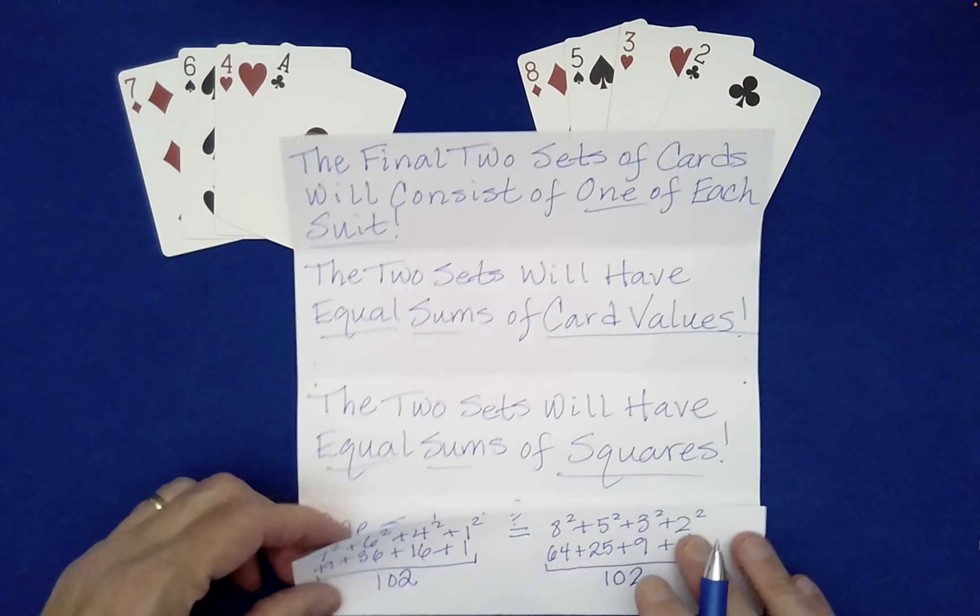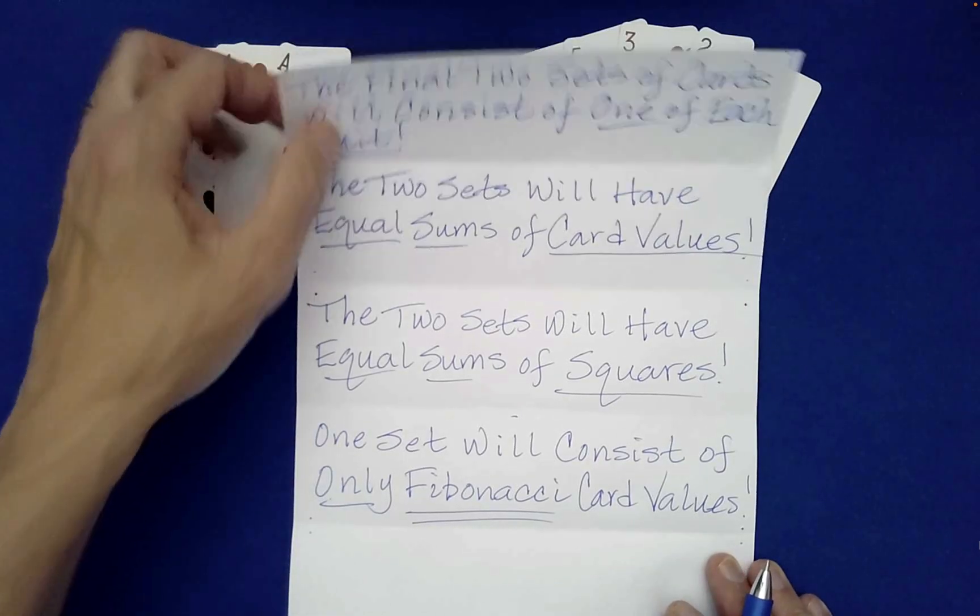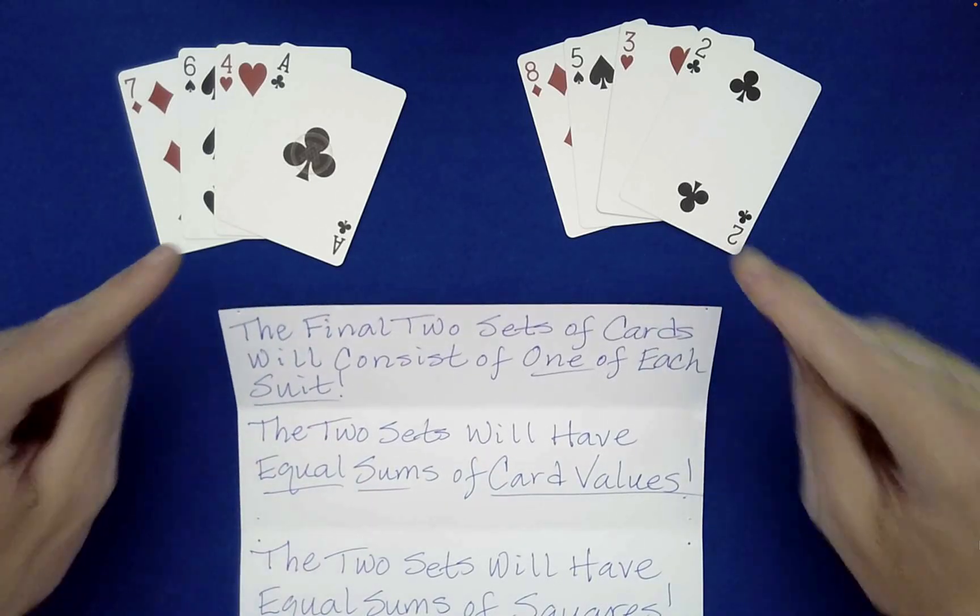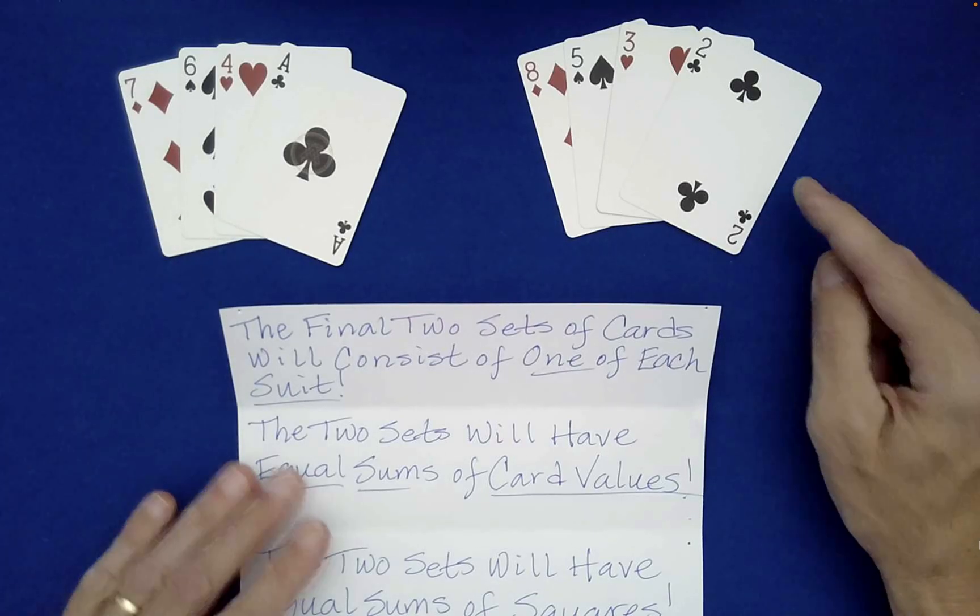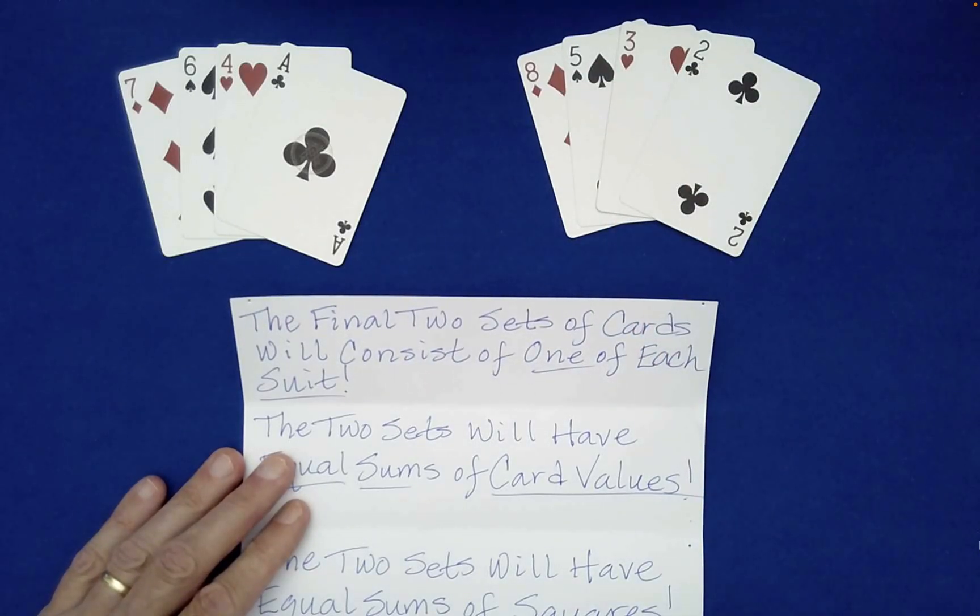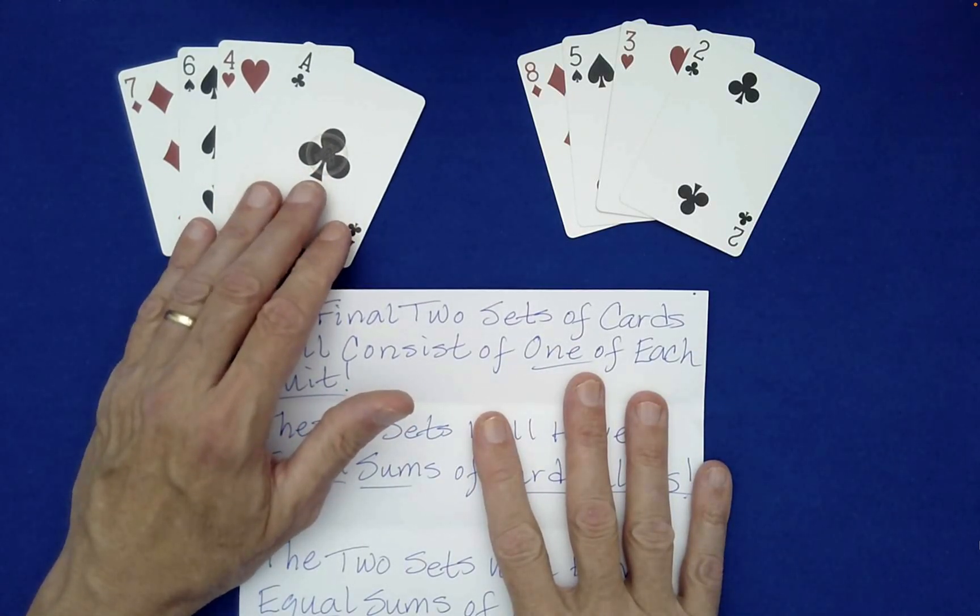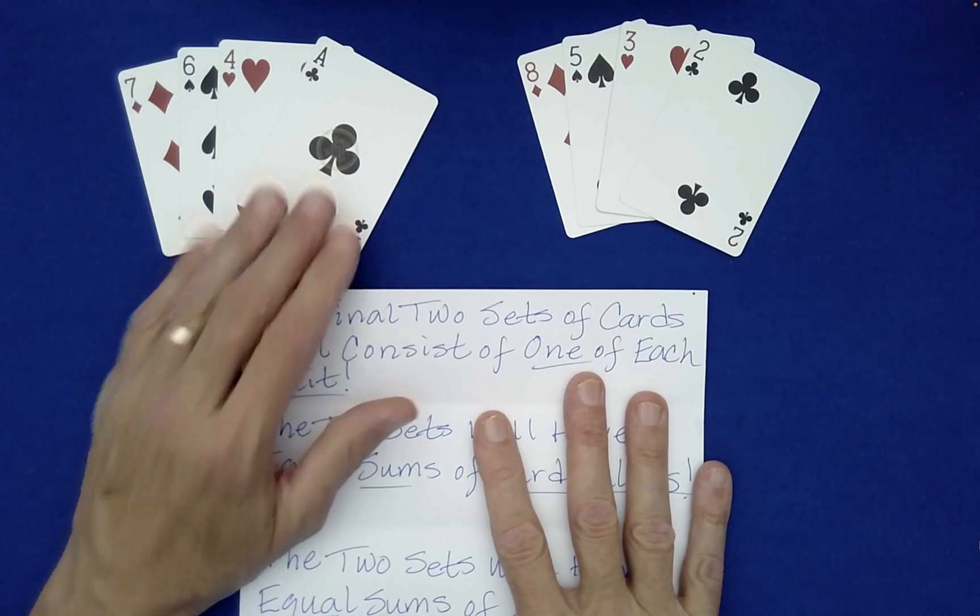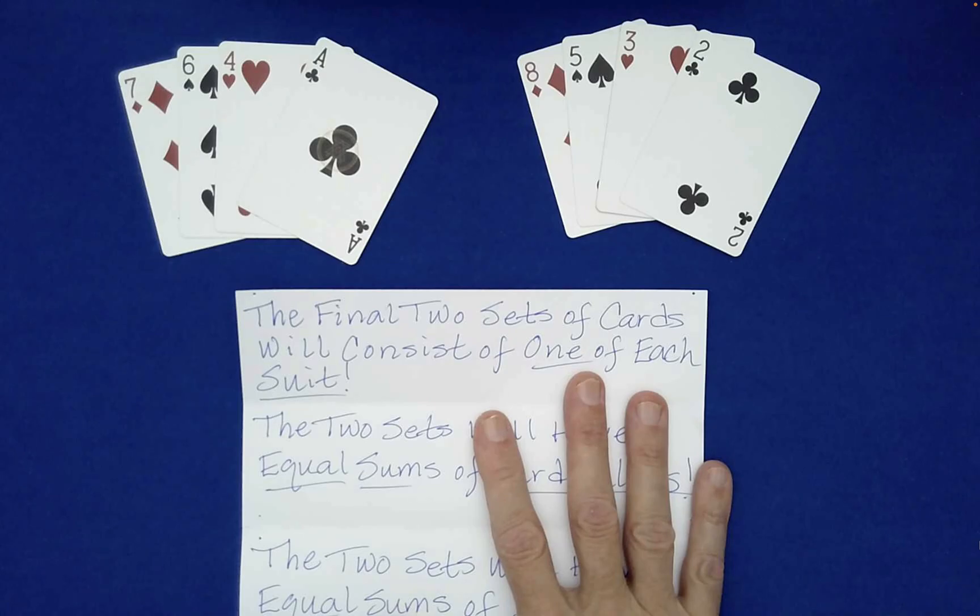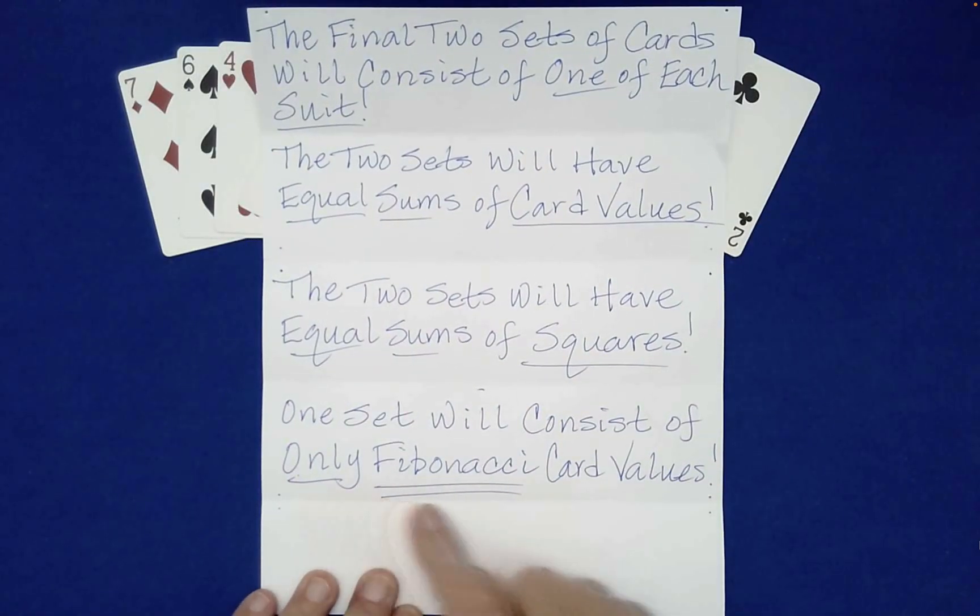Well, believe it or not, there's another part to the prediction. One set of values will consist of only Fibonacci card values. Is that true? Is it true that the card values in one of these two sets are purely Fibonacci numbers? Well, two, three, five, eight are indeed Fibonacci numbers. Now, it is true over here, one is a Fibonacci number. But four and six and seven are not Fibonacci numbers, whereas all four of these are. So this last claim right here is absolutely true.